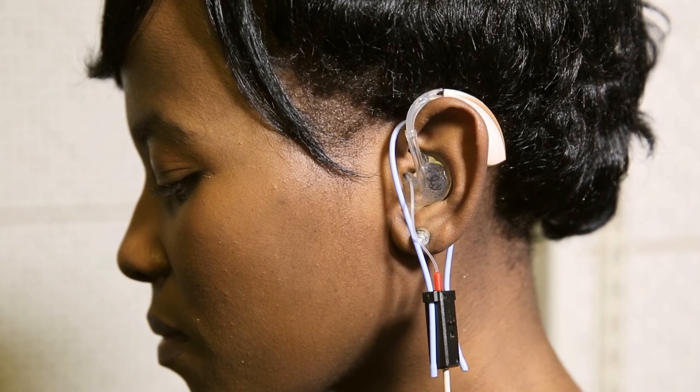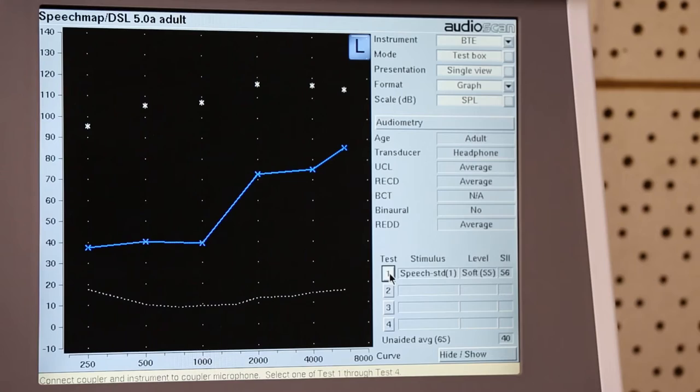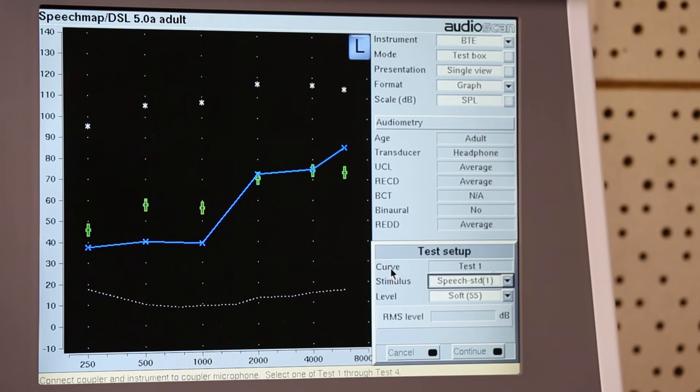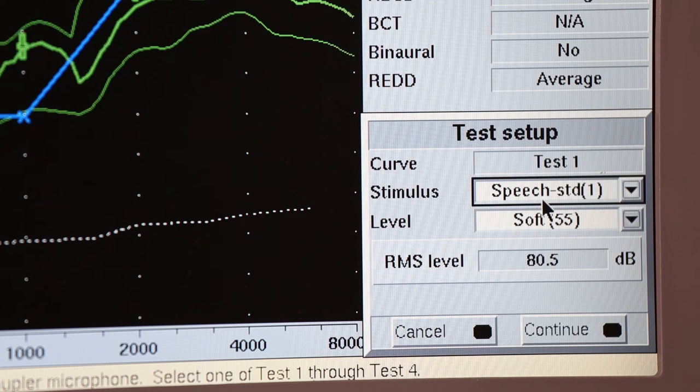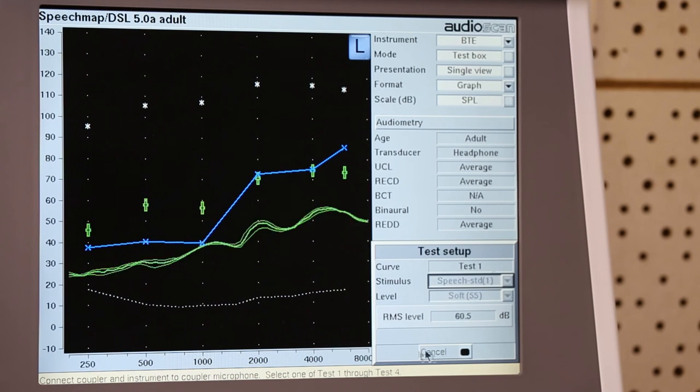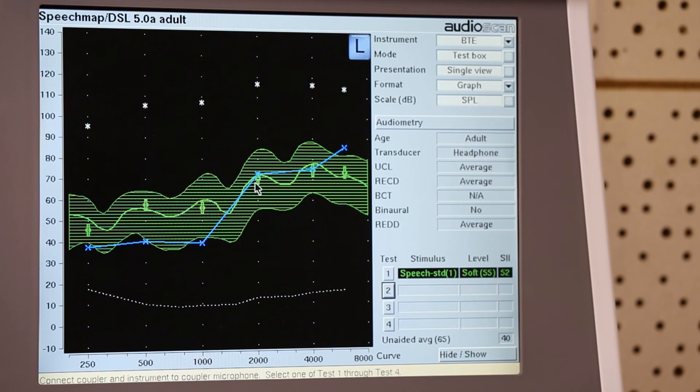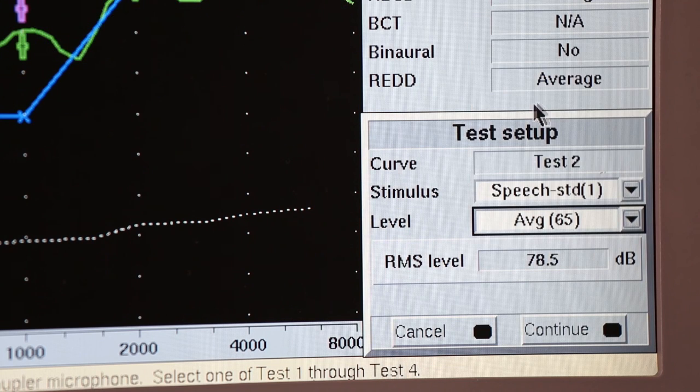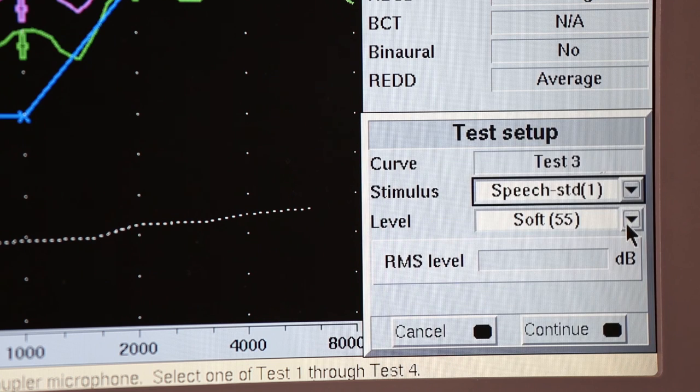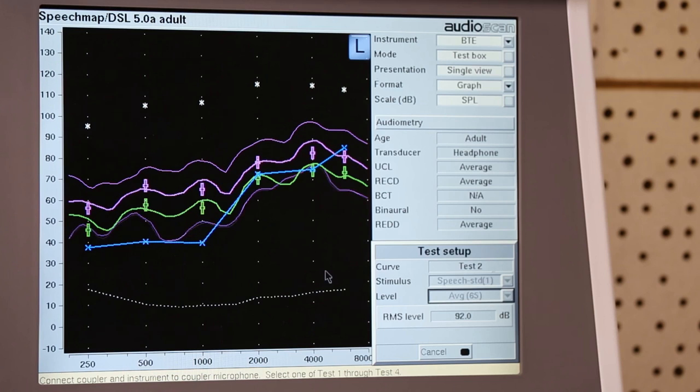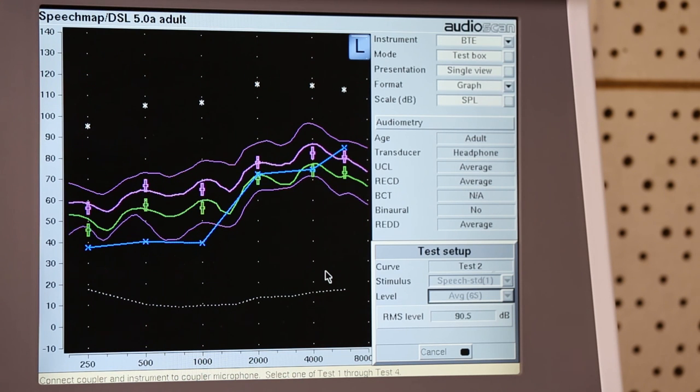The client should now be facing the speaker for speech mapping. You will now press one and then press continue once you have checked that it is presenting the correct stimulus at the correct dB level. You will now see the target and you are wanting this middle line to dissect the target across the frequencies. You can repeat the test at each of the dB levels, usually at 55, 65, and 75 dB, and manipulate the gain on the hearing aid software to ensure you get a good fit to target.